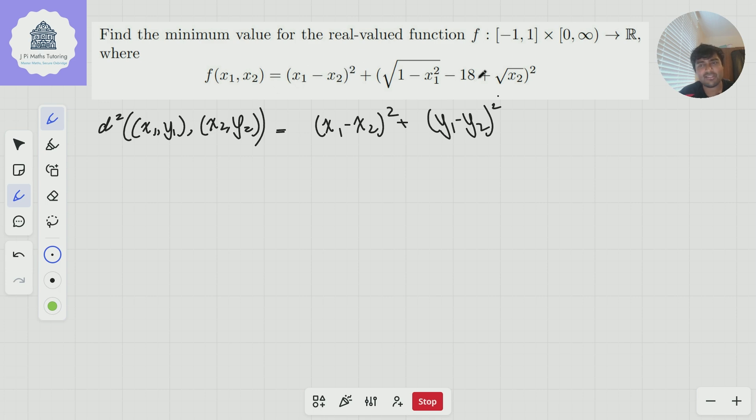Amazing. So in fact, what we can do is we can think of this function f using distances. It's simply the distance between the points x1, y1, where y1 is √(1 - x1²), and the point x2, and where the y2 value is 18 minus √x2. So just to be clear, f is equal to the distance squared between these two points.